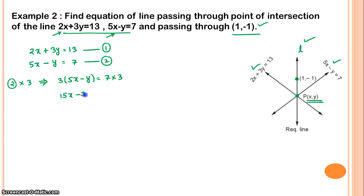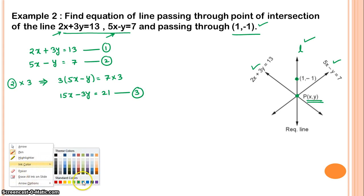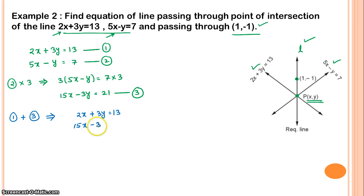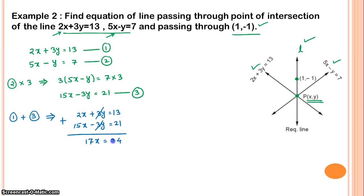To eliminate y, we multiply the second equation by 3: 3 times (5x minus y) equals 3 times 7, giving 15x minus 3y equals 21. Now we add this to equation 1: 2x plus 3y plus 15x minus 3y equals 30 plus 21. The 3y terms cancel, leaving 17x equals 34 — wait, that should be 17x equals 51. So x equals 34 divided by 17, which equals 2.